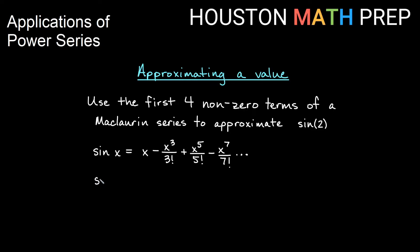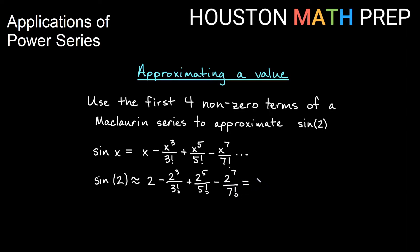If I want to approximate sine of 2 — now 2 is a bit further out from zero, but we'll go ahead and try using McLaurin. Sine of 2 is approximately 2 minus 2 cubed over 3 factorial plus 2 to the 5 over 5 factorial minus 2 to the 7 over 7 factorial. So: 2 cubed is 8, 3 factorial is 6; 2 to the fifth is 32, 5 factorial gives us 120; 2 to the 7 is 128, and 7 factorial gives us 5040.